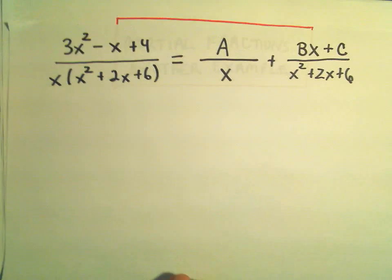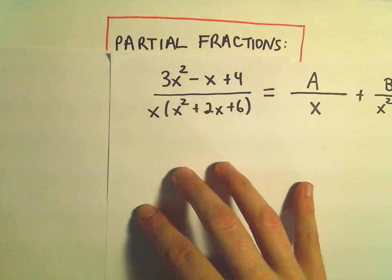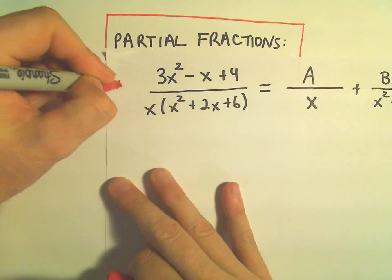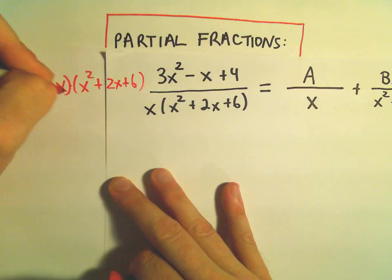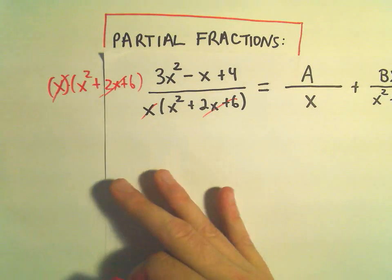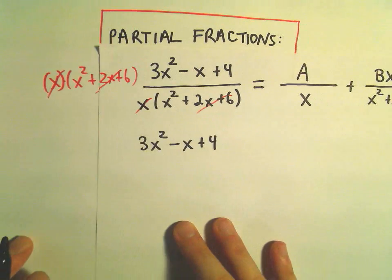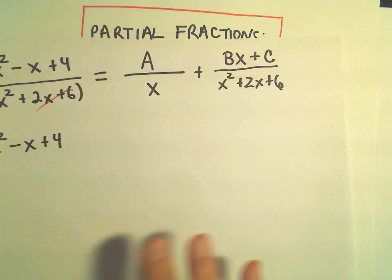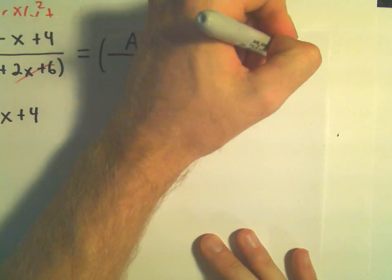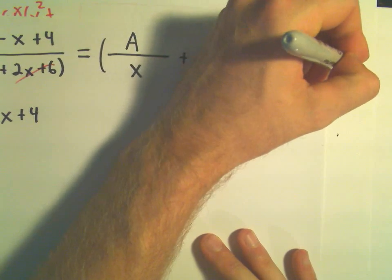Okay, so I'm going to multiply both sides of my equation, again, basically by this denominator. So I'm going to multiply the left side by x times (x² + 2x + 6).